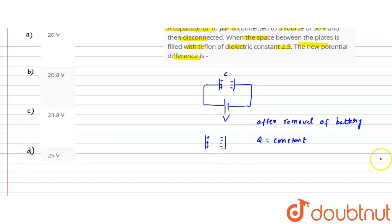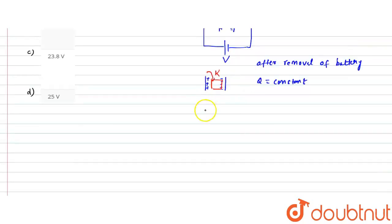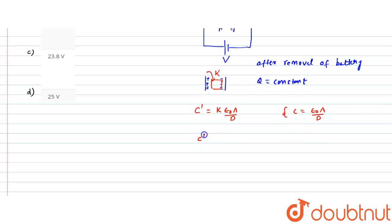If Q becomes constant, then after that what we did is we inserted a dielectric material between the capacitor plates. The dielectric constant k makes the new capacitance C' equal to k times the original capacitance — so C' = k·C. Guys, the capacitance increases k times.